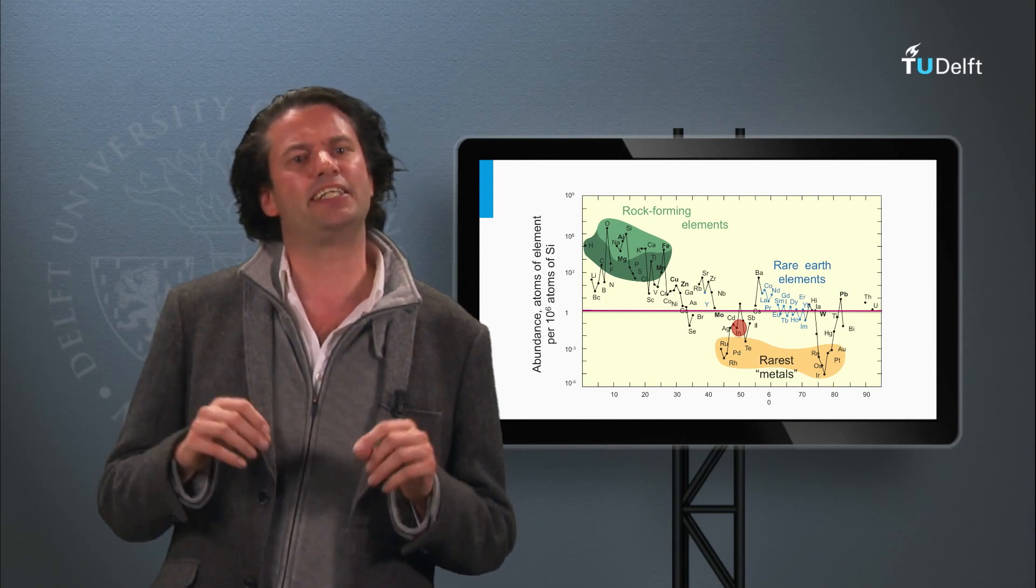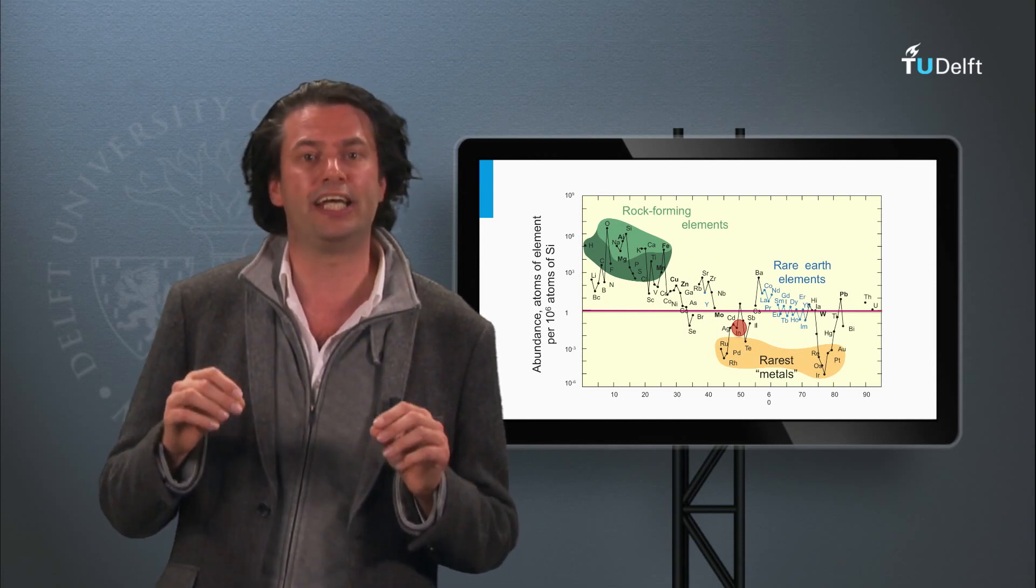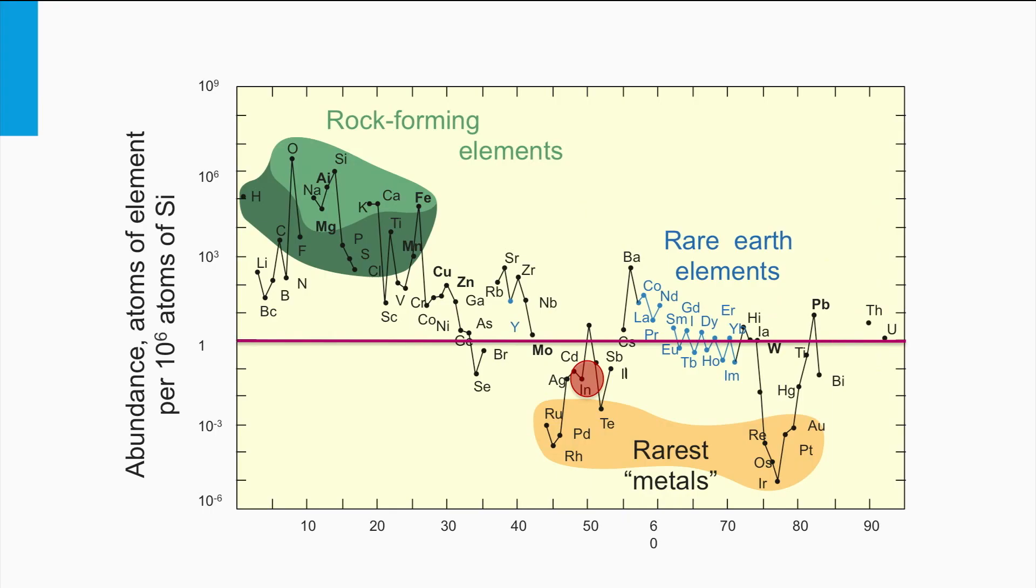Here we see an illustration that shows the abundance of the various elements in the Earth's crust. The red line is an indication for the critical abundance of a source material to be used for large scale production. As you can see, indium is not a very abundant element, as it lies below the red line.